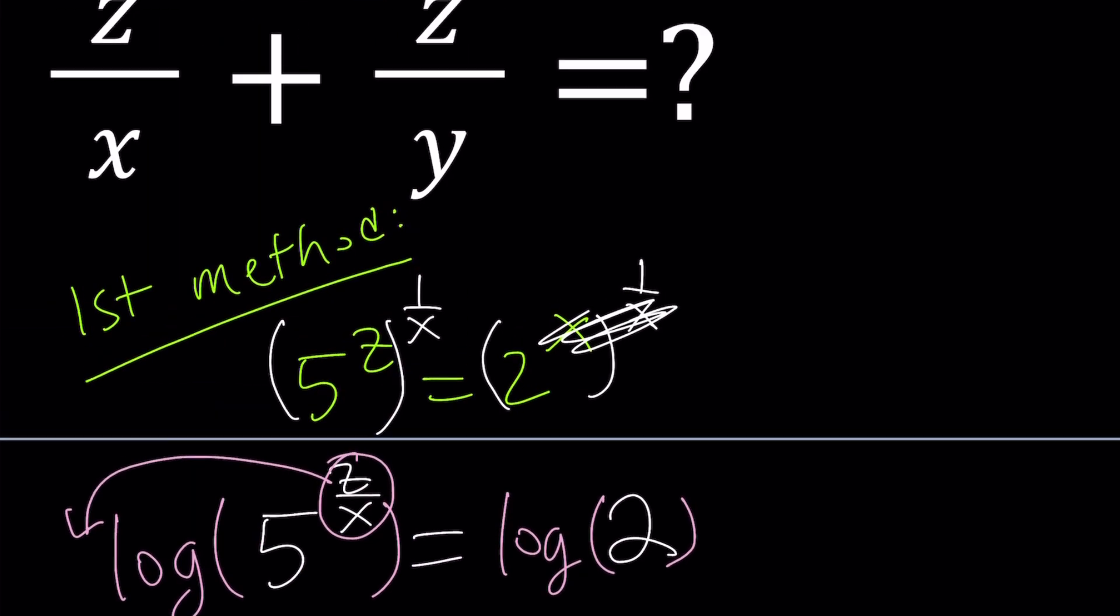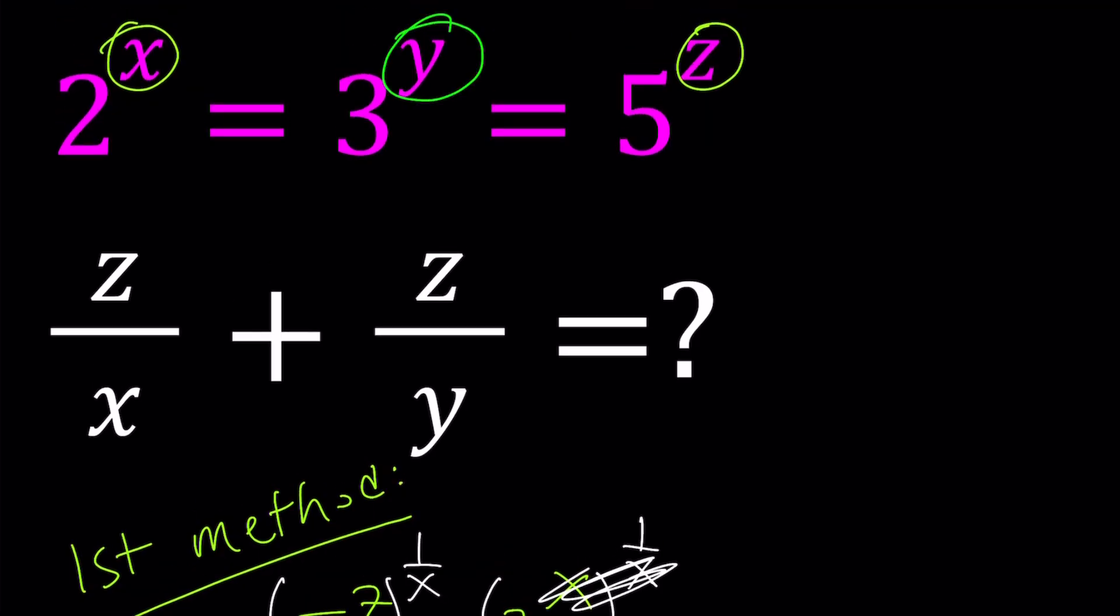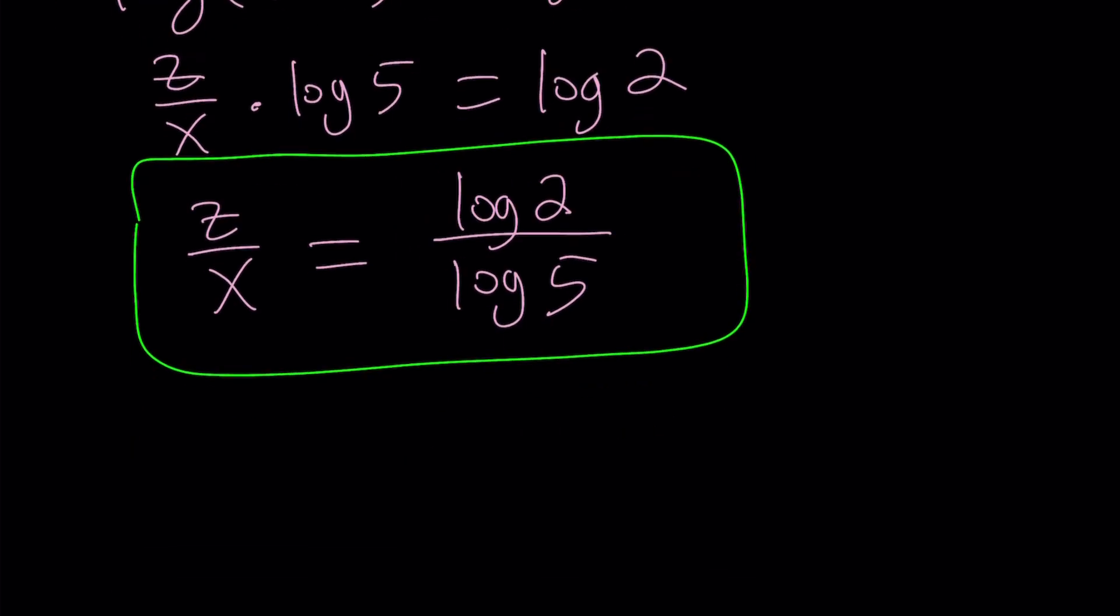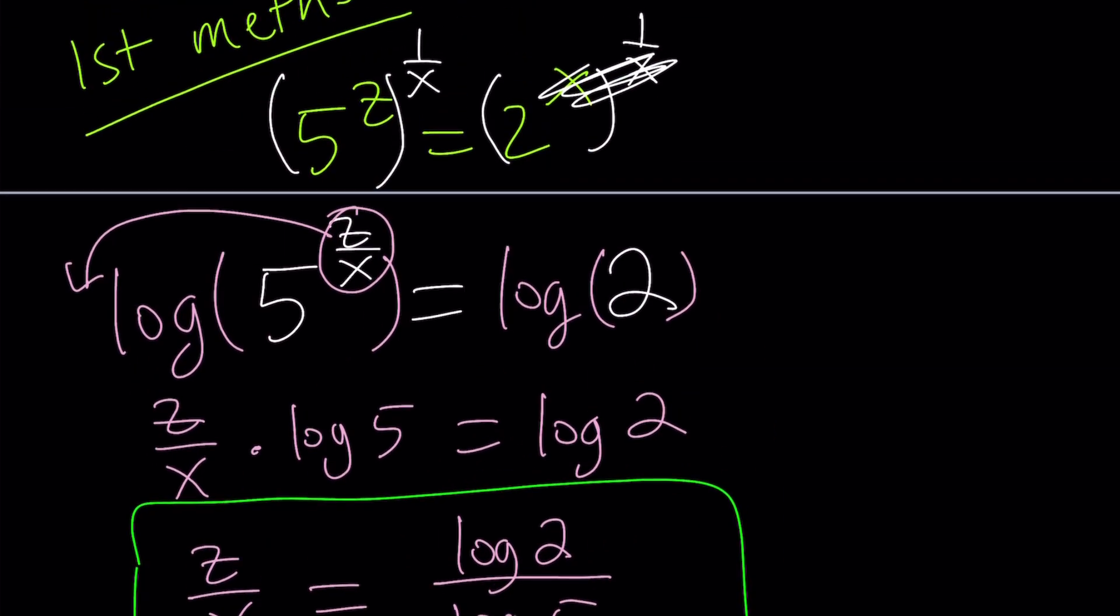We got part of it but we also need to find z/y. z and y means we're going to use 5 and 3. So let's do the same thing. 5^z = 3^y. And remember our goal is to find z/y. So let's raise both sides to the power 1/y.